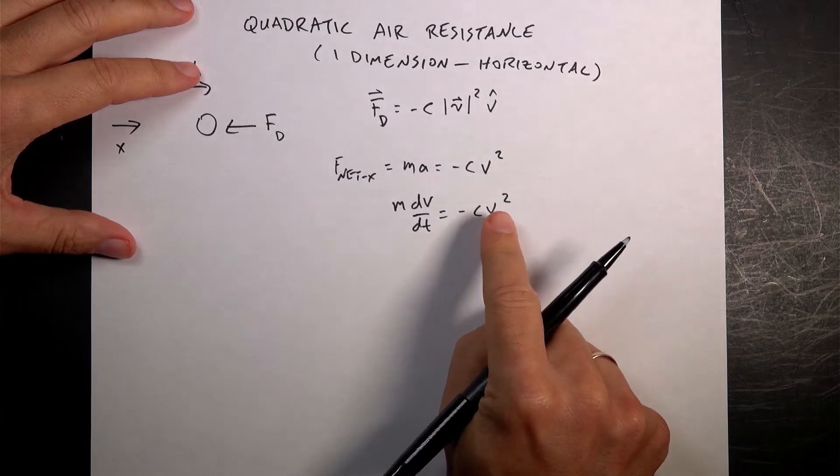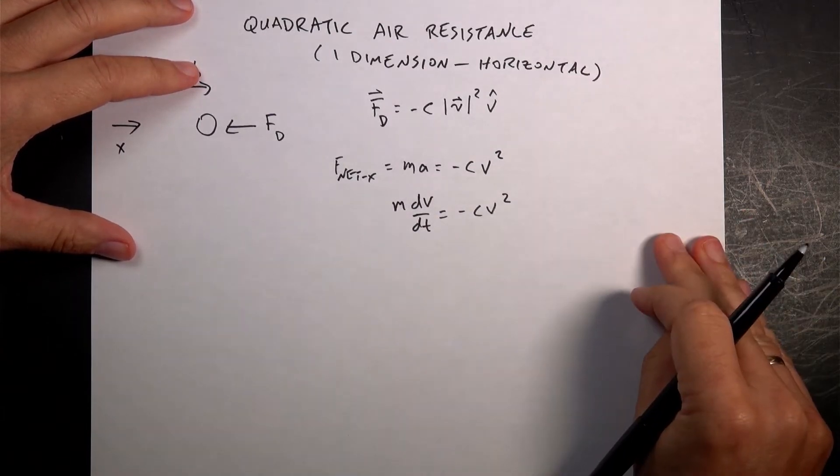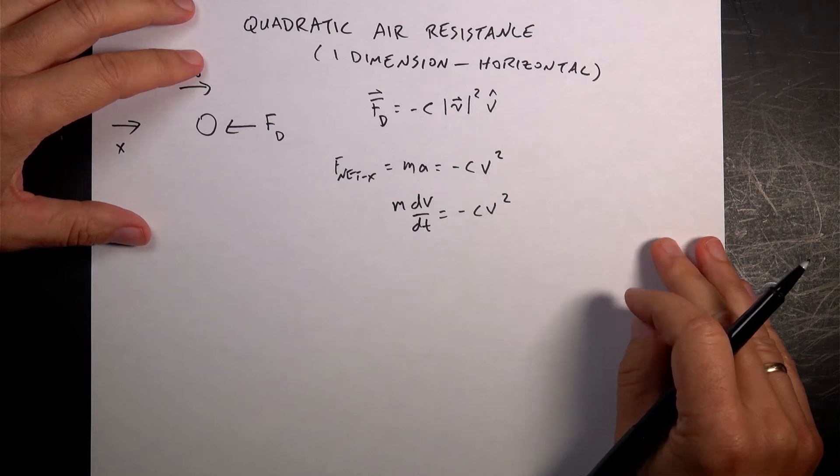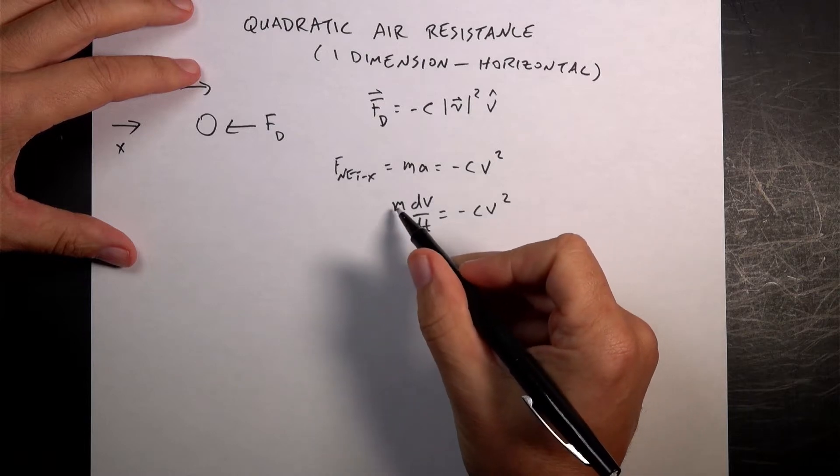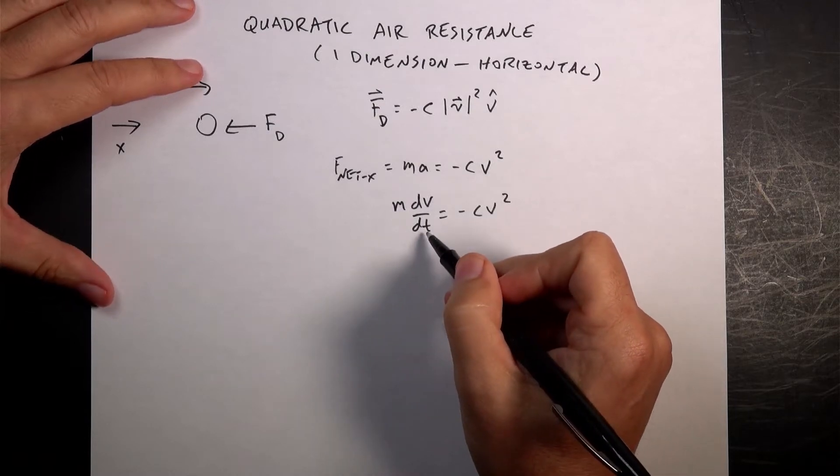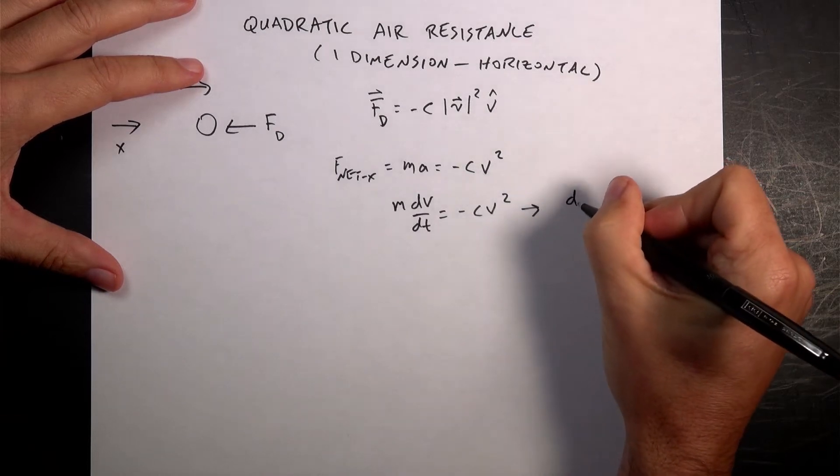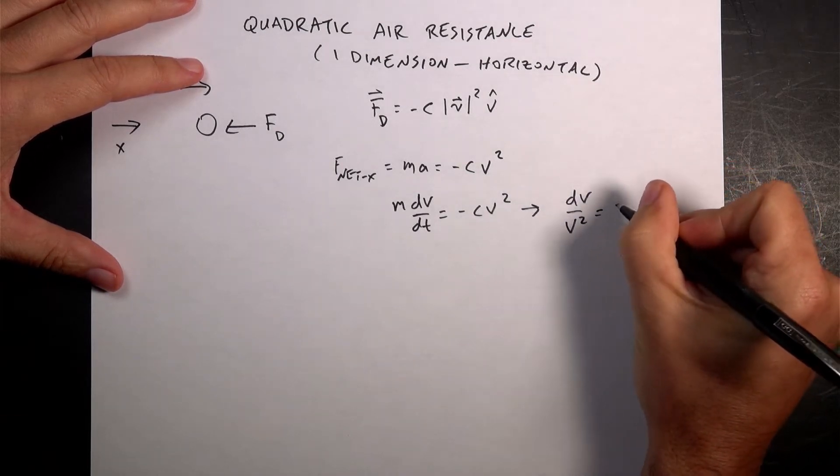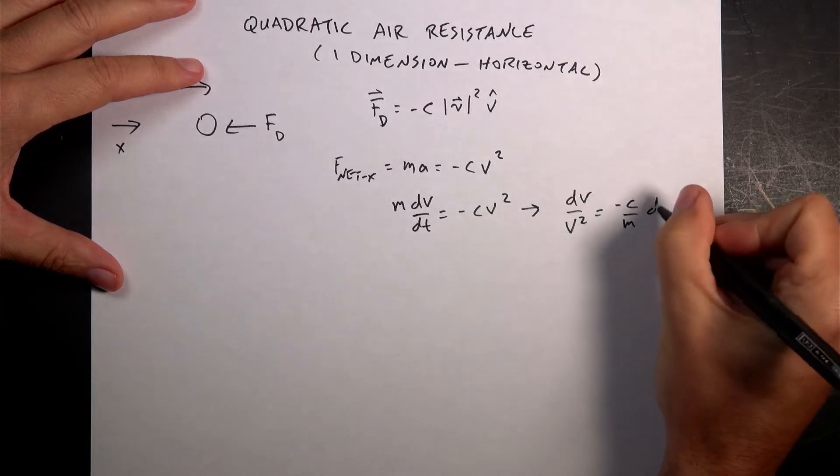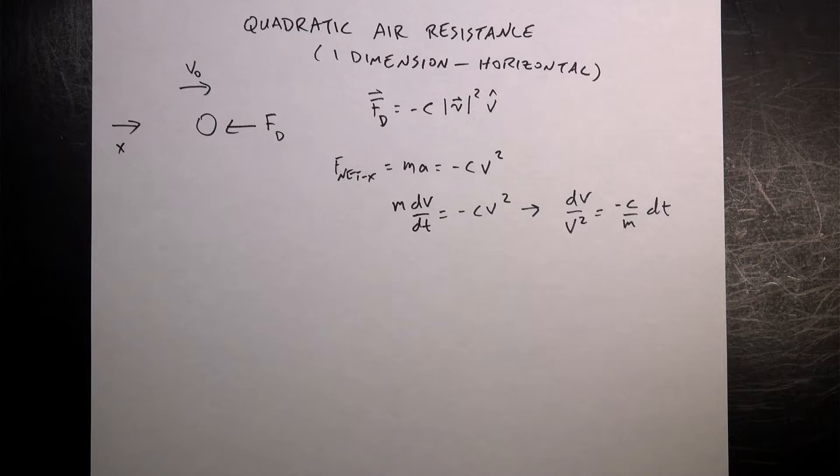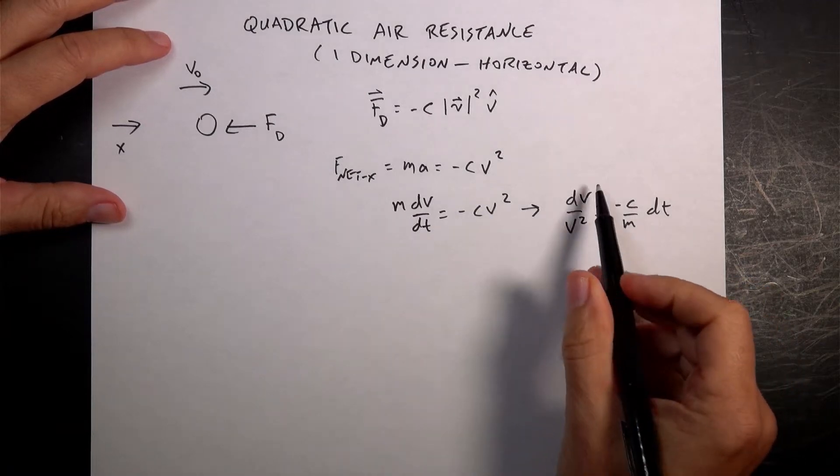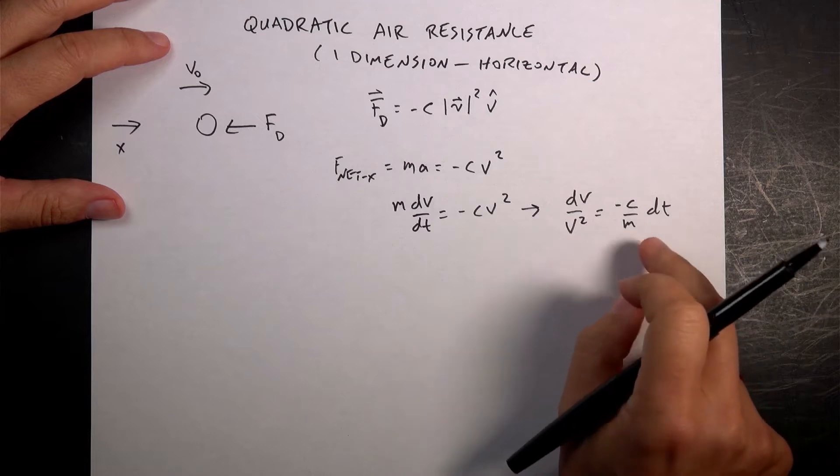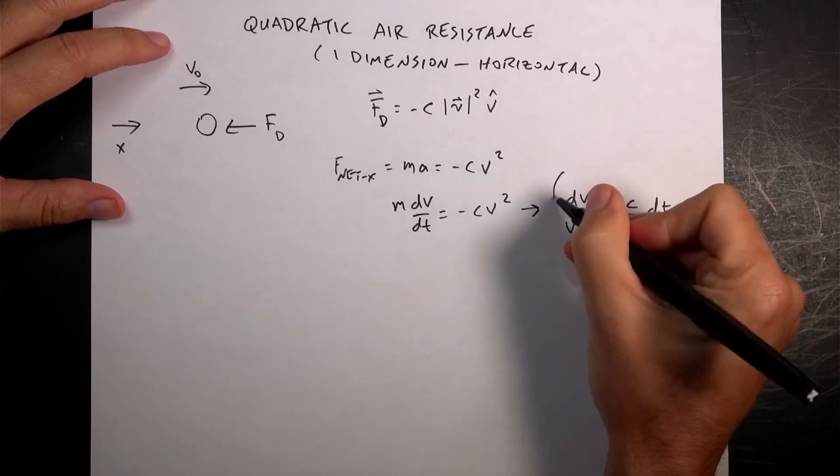And then what I want to do is to get all the v terms on one side, all the t terms on the other side, and so that's not too terribly difficult. I can divide both sides by v squared, and I can multiply both sides by dt over m. So this becomes dv over v squared is negative c over m dt. I know I skipped a little bit of algebra there, but I don't think that should be too bad. But now, since this side only depends on v, this side only depends on t, I can integrate both sides.